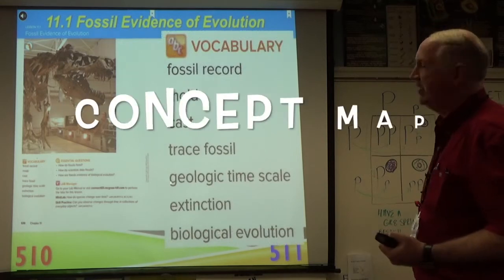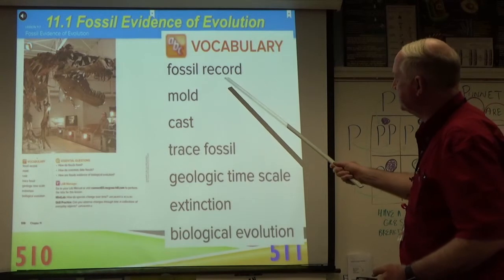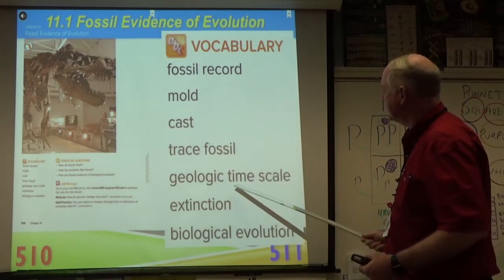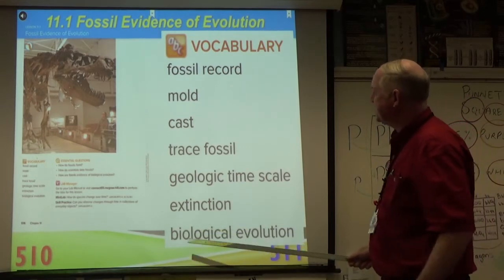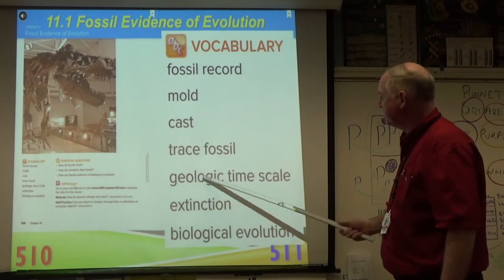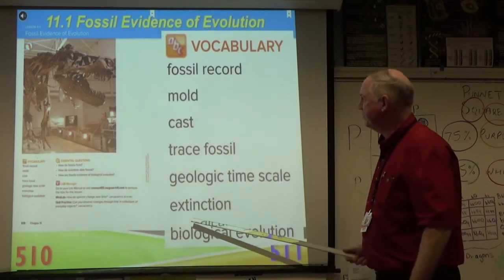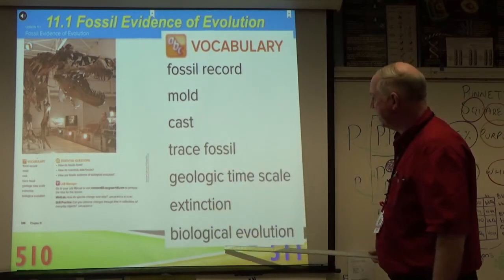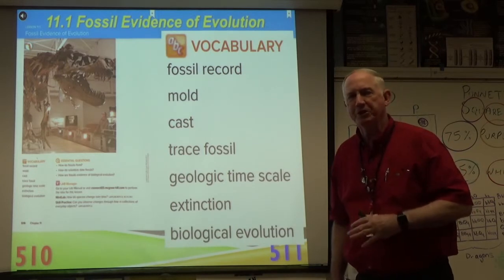Chapter 11 has a few vocabulary words: the fossil record, mold, cast, trace fossil, geologic time scale, extinction, and biological evidence. Of these, we've already talked about the fossil record, the geologic time scale, and extinction should be familiar. Mold, cast, trace fossil, and biological evolution should be somewhat new terms.